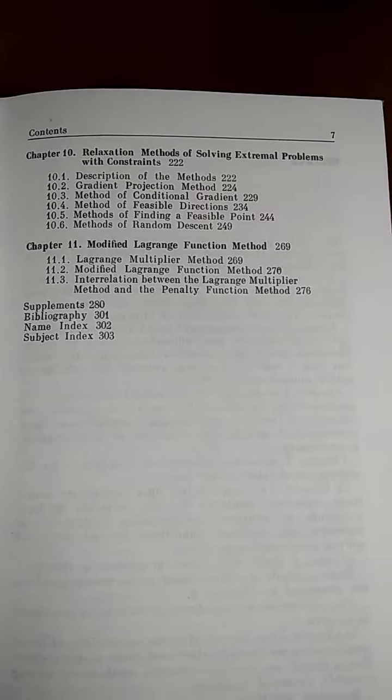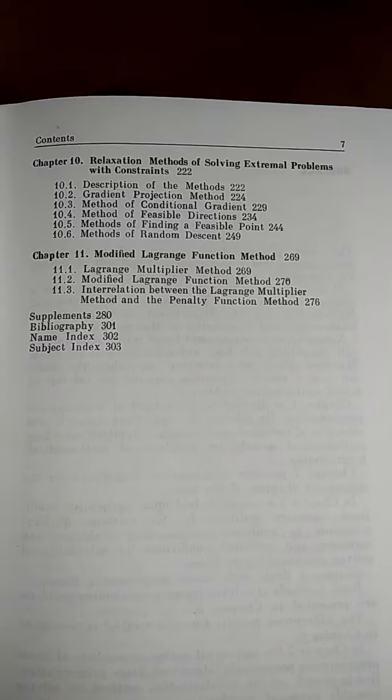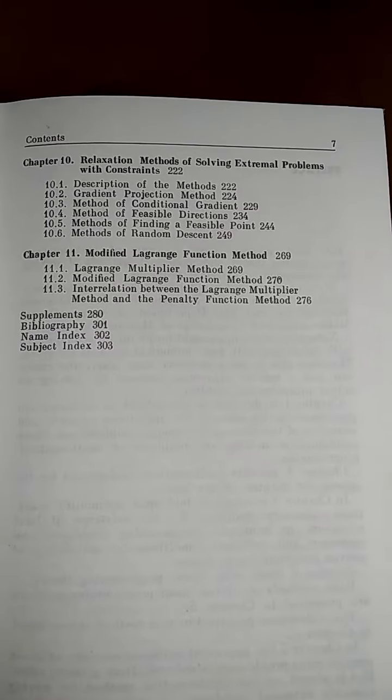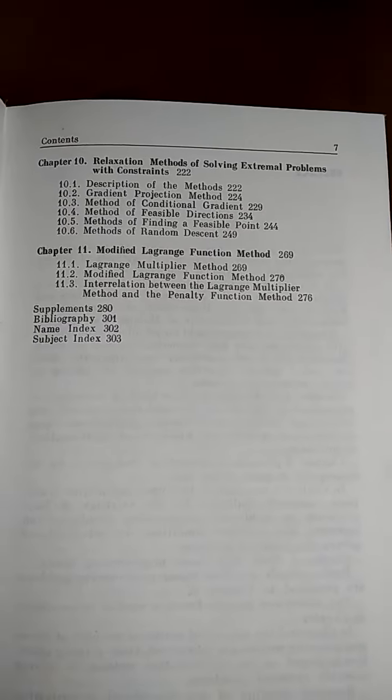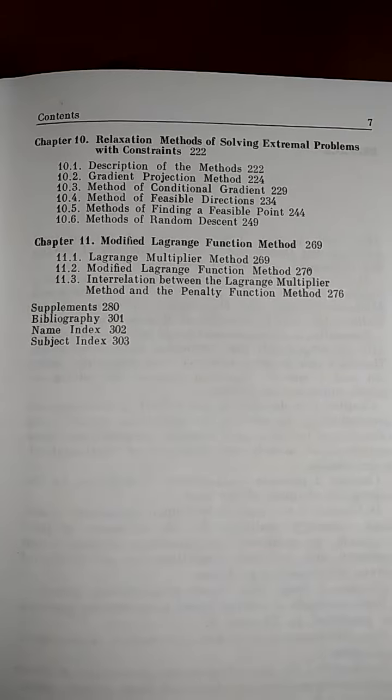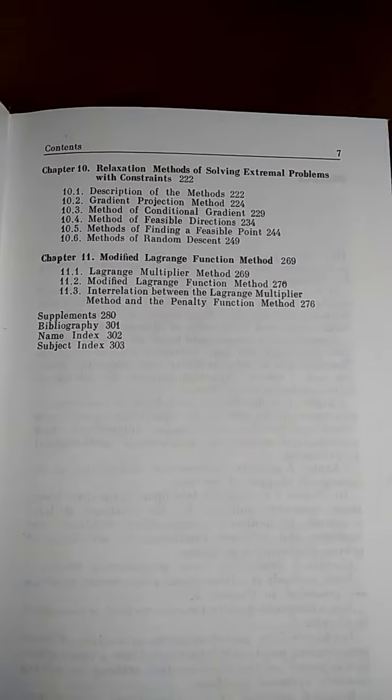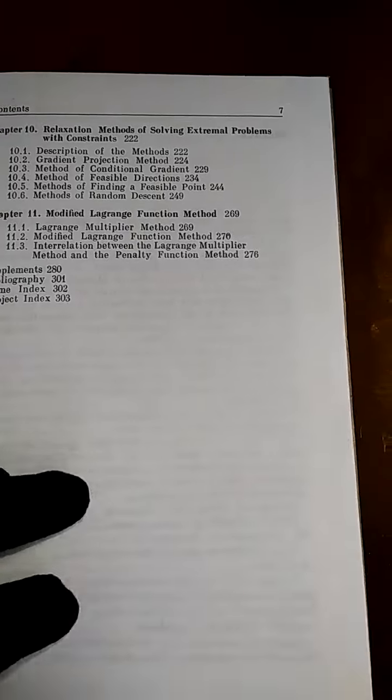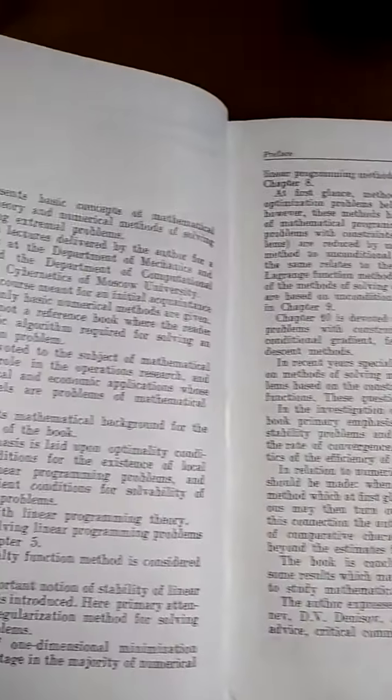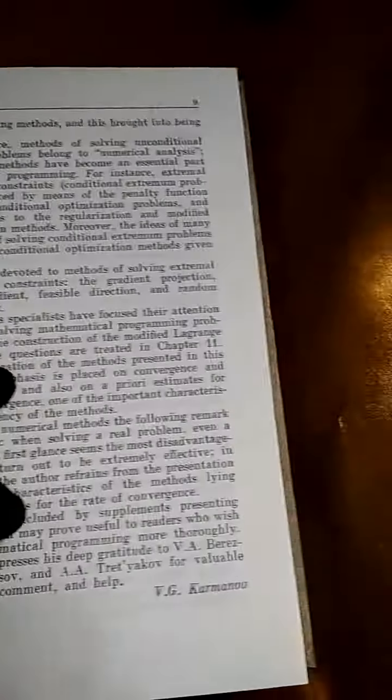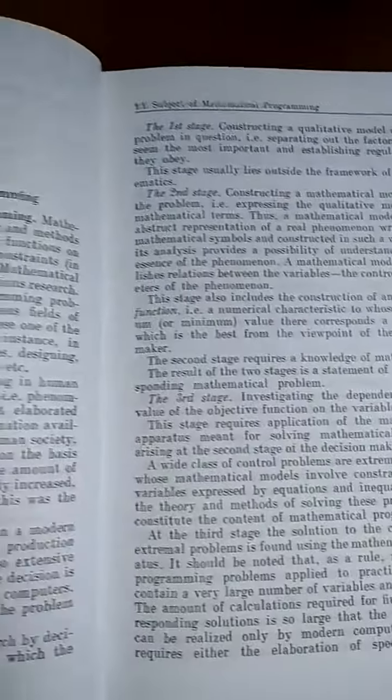Methods of finding a feasible point, random descent, then the last chapter, modified Lagrange function method. So let's go through the book. Initially the preface is there, then introduction.